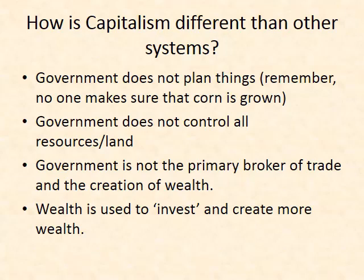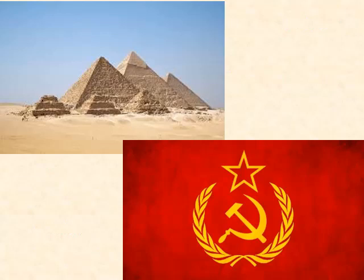How is American capitalism different from other systems? The government does not plan things in the economy — no one is making sure all that corn is grown. The government does not control all the resources and land; there is private property ownership where you can buy and own land or resources. Government is not the primary broker of trade — more wealth is created by individuals in a capitalist system than by the government. And in capitalism, wealth — the money you make — is used to reinvest and create even more wealth.